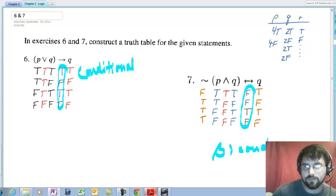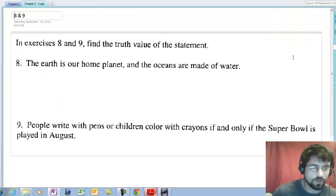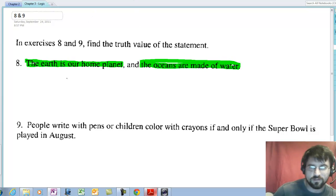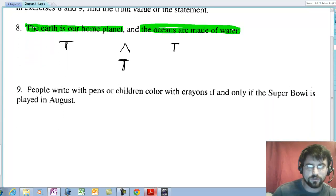Alright, moving on. Hopefully this is becoming easier for you guys. So we're trying to find the truth value of the statement. Well, we have to go and look at the simple statements here, and we have to determine ourselves whether these statements are true or false. So the Earth is our home planet, that's true. And the oceans are made of water, I'd say that's true. True and true is true. A conjunction is only true when both are true.